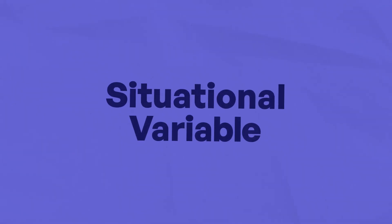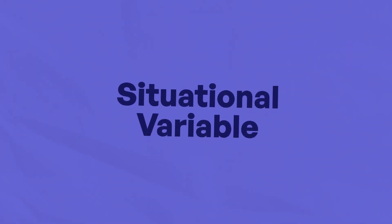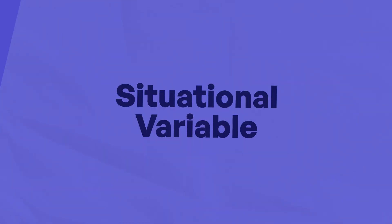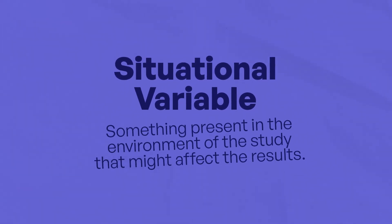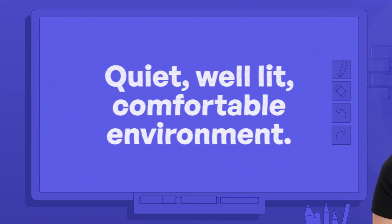I need to think about situational variables. Are my participants in a suitable environment? If my participants are taking their maths tests in a really noisy room, this might affect the way that they perform. If I put them in a freezing cold room, this might also have an impact on their scores. A situational variable is something present in the environment of the study that might affect the results. So I need to make sure that participants in both conditions take their maths tests in a quiet, well-lit, comfortable environment.